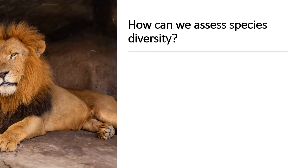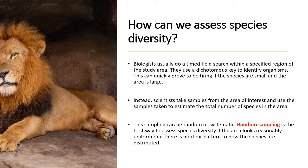So how do we assess species diversity? Usually biologists would do what is called a timed field search within a specified study area, and sometimes they use what is called a dichotomous key to identify organisms. But usually that can be very exhausting, especially if the area is large and the species you're measuring are really tiny. So usually what scientists would do is take samples from the area of interest and use those samples to estimate the total number of species in the area.